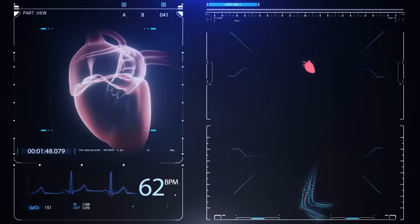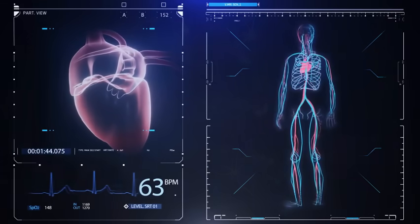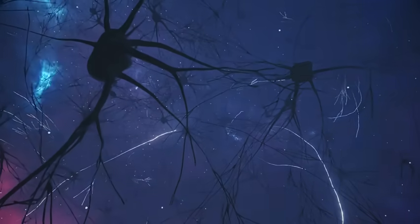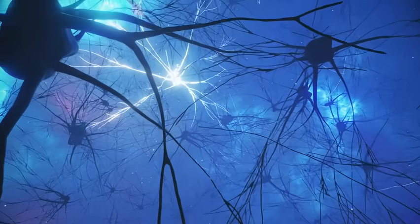Your thoughts, movements, emotions, even your heartbeat are controlled by tiny cells called neurons. These are the messengers of your nervous system and your body has billions of them.